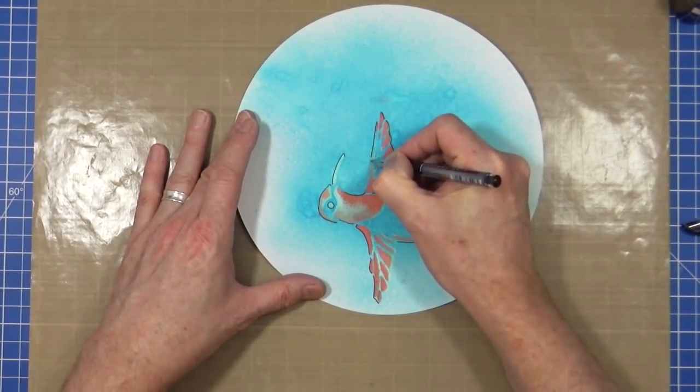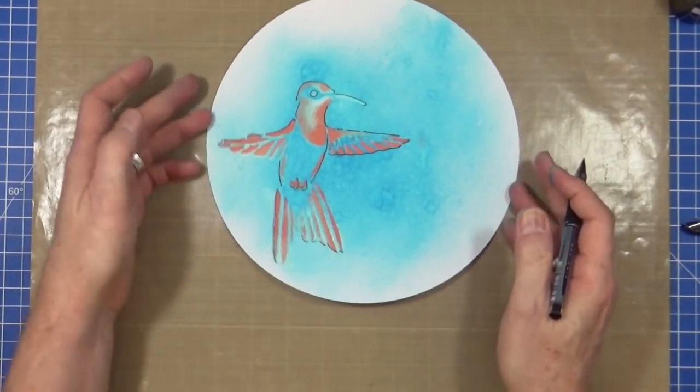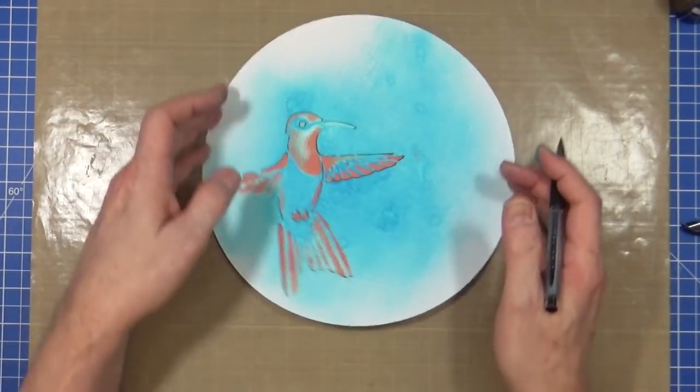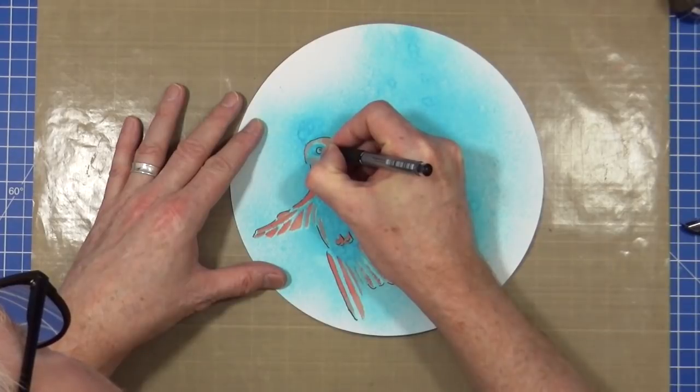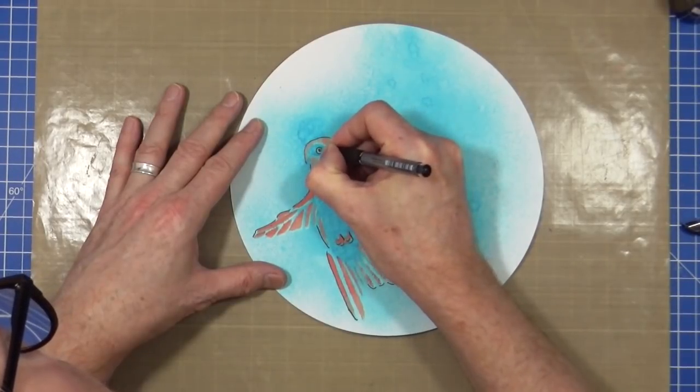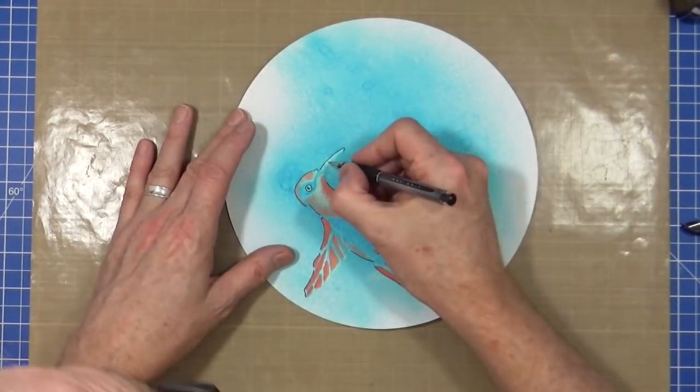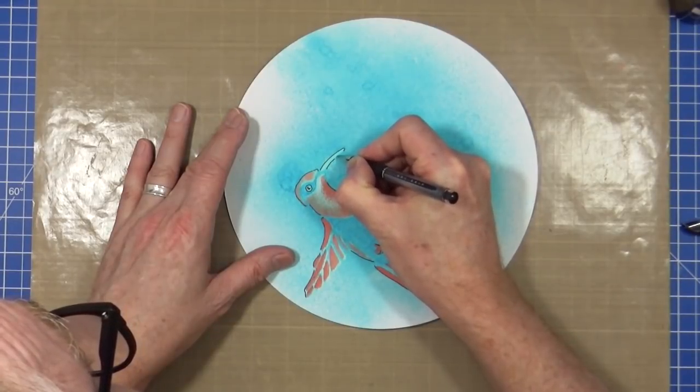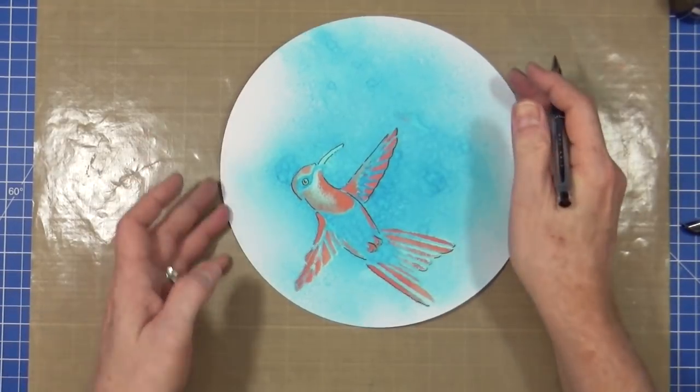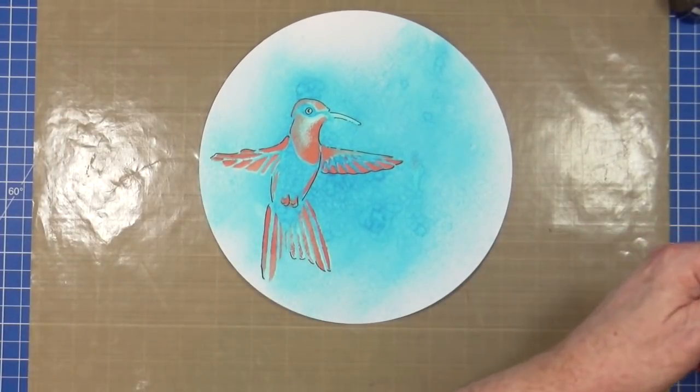And then just a little bit across the top. I'm changing my mind as I'm going just to kind of create that little bit of an impression. So I think the eye just needs a little bit extra. Maybe just a tad. There. Very subtle. Very light.